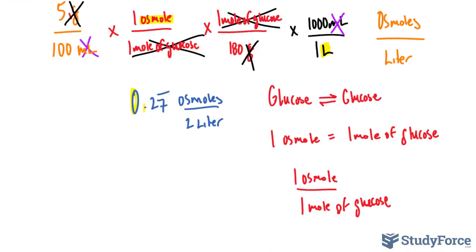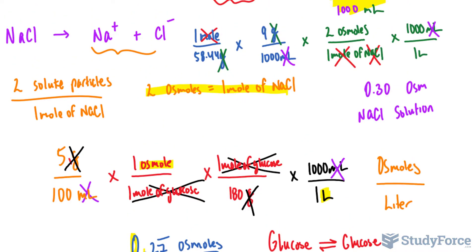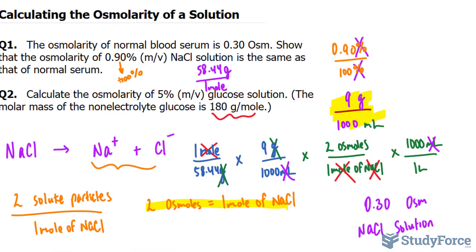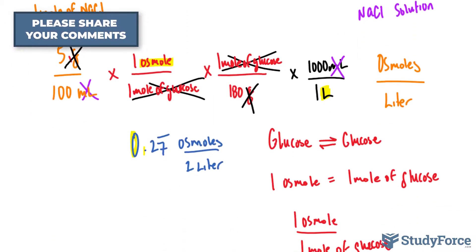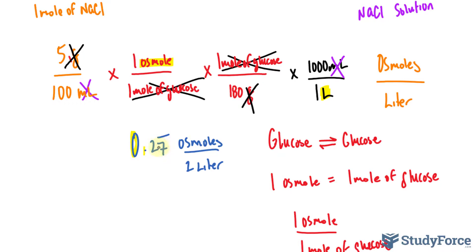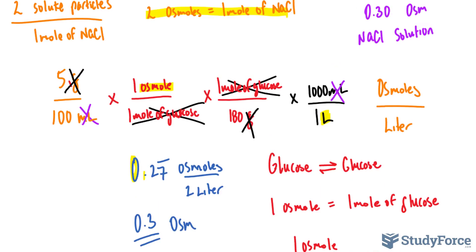Now if we want this to one significant figure, let's count how many significant figures we had here. It's hard to tell because you can say 5% is one significant figure. So if we want to round this to one significant figure, given that 7 is greater than 5, this 2 would be rounded up to 3. So it's 0.3 OSM. That is the osmolarity of glucose.